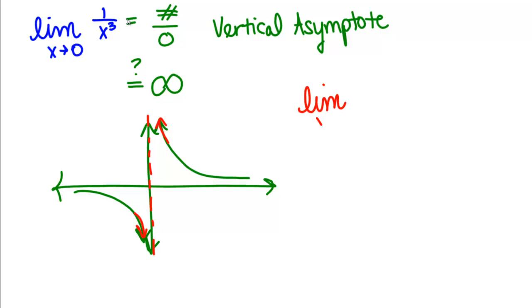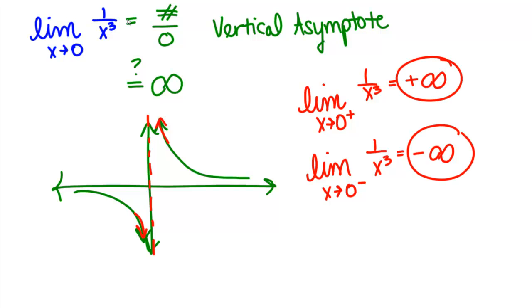So here, we have the limit as X goes to 0 from the right side of 1 over X cubed going to positive infinity, and the limit as X goes to 0 from the left side of 1 over X cubed going to negative infinity. These two don't agree, and that means that the limit as X goes to 0 in general of 1 over X cubed equals does not exist.